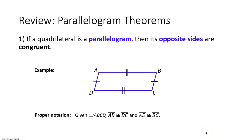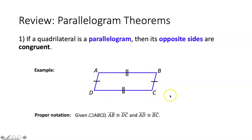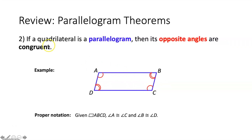Let's quickly review the parallelogram theorems. The first one says if a quadrilateral is a parallelogram then its opposite sides are congruent. So if we know that quadrilateral ABCD is a parallelogram, then we know that the opposite sides must be congruent to each other.